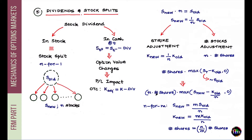Let's now move on to dividends and stock splits. For an exchange-traded option, how does the exchange change the attributes of the option to ensure the investor does not have any PnL impact when a dividend happens? Stock dividends happen in two forms: a stock can pay you a dividend in the form of more stocks — that's a stock dividend — or in the form of cash, which is a cash dividend.